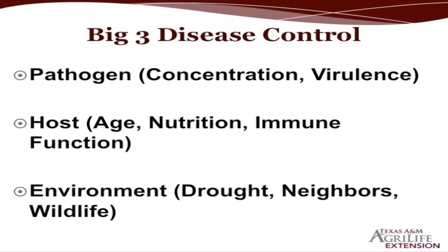When we talk to veterinarians and producers, the conversation usually goes back to the pathogen — BVD, lepto — centering everything on that pathogen. But we've got to remember this is a multifactorial deal. The pathogen is very important, but it exists in a lot of places without causing disease. It has a lot to do with the concentration of that pathogen, and for some pathogens like BVD, virulence differs between subgroups — some can be much more virulent than others.